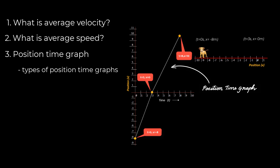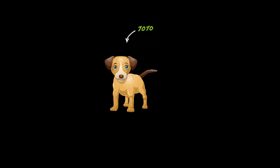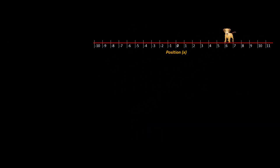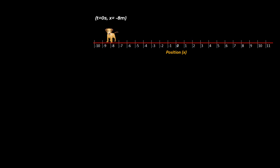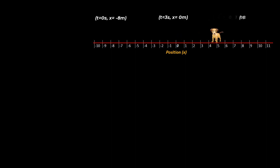To understand the idea of average velocity, let us say there is a dog named Toto moving on a horizontal track in search of a bone. At time t equal to 0, Toto is at x equal to minus 8 meters. Then, three seconds later, it is at x equal to 0 meters, and then at t equal to 8 seconds, it is at x equal to 10 meters.